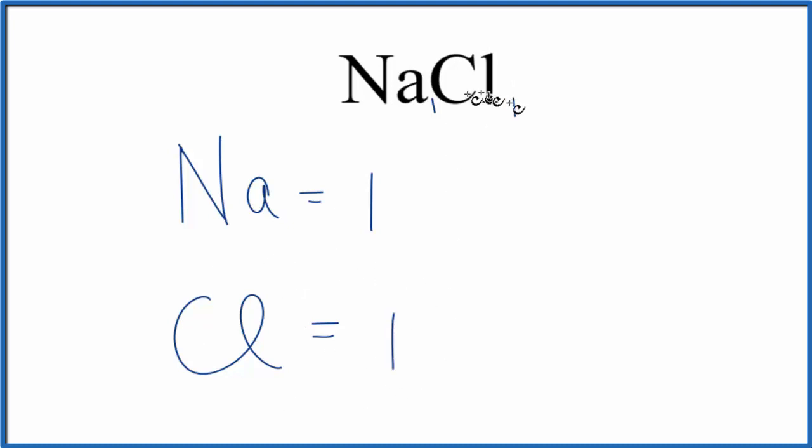For chlorine, nothing written again, we assume that to be one. So we would have one chlorine atom in this NaCl.